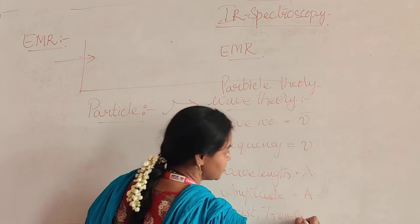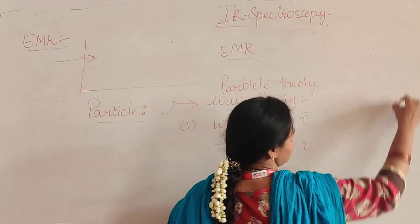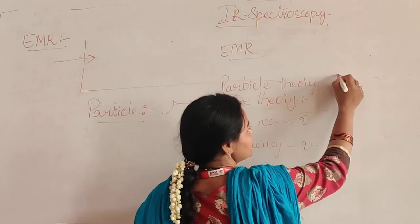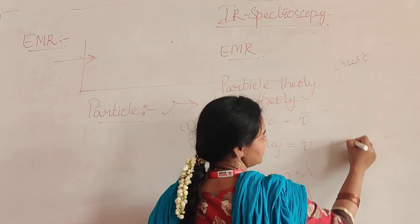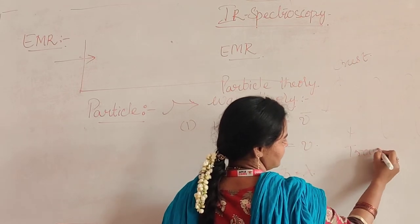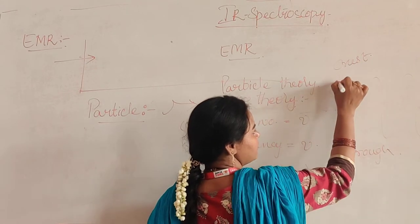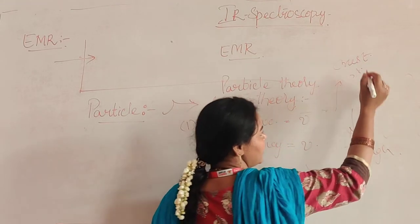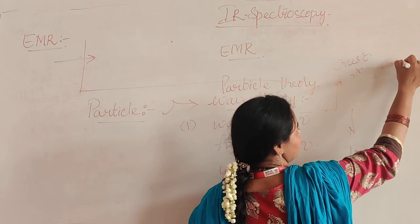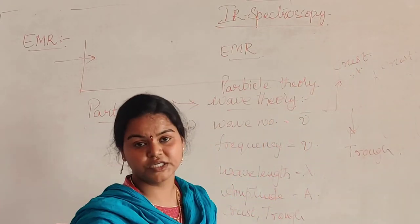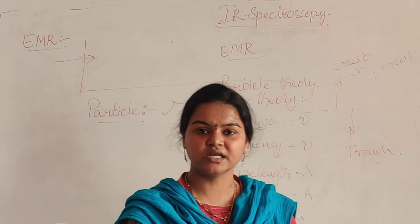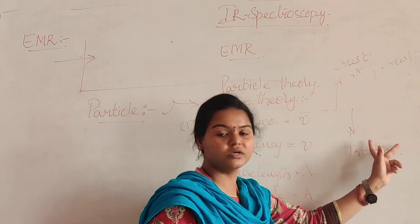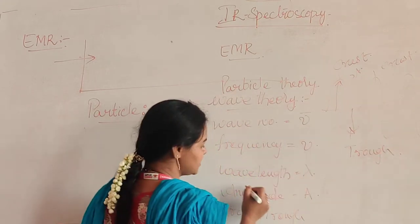I will show you through a figure. Suppose a particle passing through a wave-kind of nature — this is known as crest and this is known as trough. The height or the depth of the trough is named as amplitude. Consecutive means side-by-side crests and troughs are positioned. The distance between two consecutive troughs is named as wavelength.